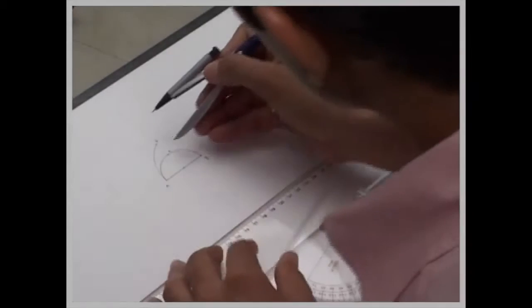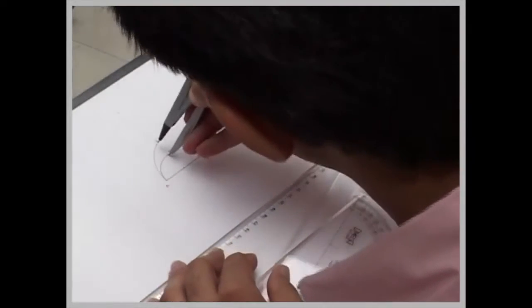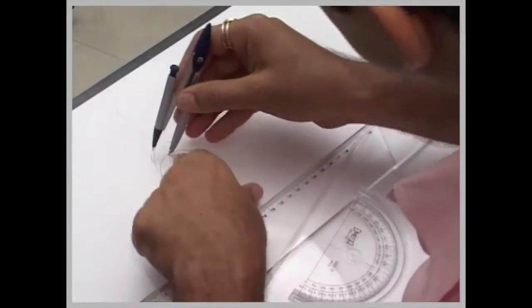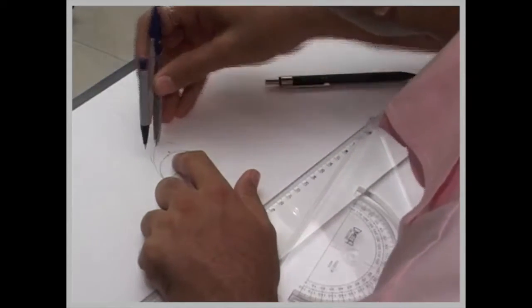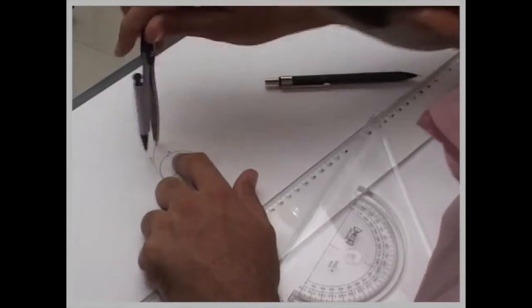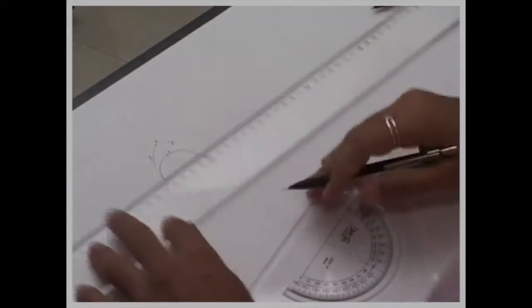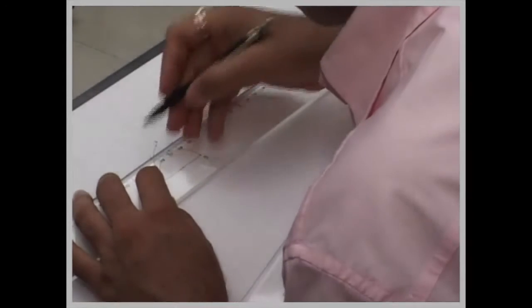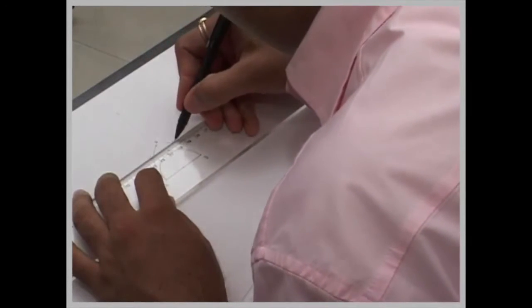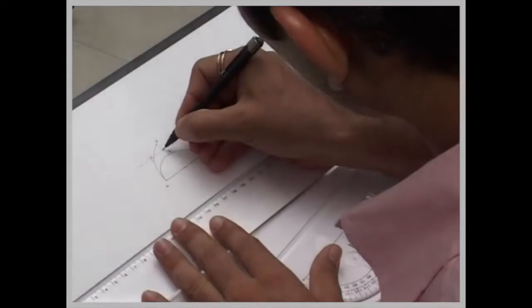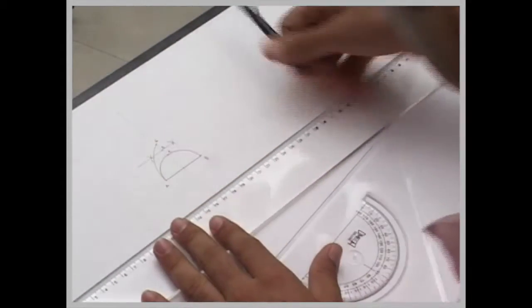Now we can bisect 4 and 6. Now we are using the same method, how to divide the line into 2 parts. From 4 we are cutting any arc, maintaining the same arc. From 6 again you cut, you draw arcs on the line, wherever it will cut, that is 0.5.